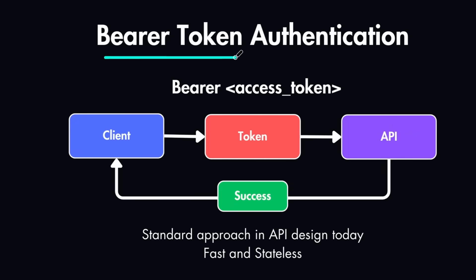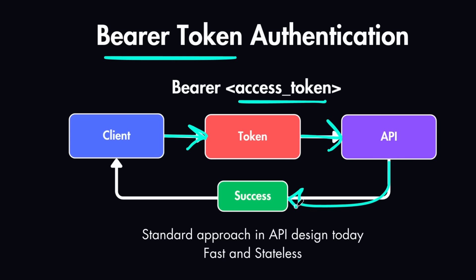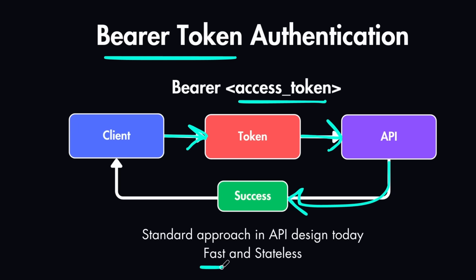Next, we have bearer tokens, which are more secure compared to basic authentication. Here, you send an access token with each request instead of a username and password encoding. Whenever the client needs to access resources, they send this token within the request, and then your API verifies or rejects the token. If it verifies, you send a successful response with the requested data. Bearer tokens are the standard approach nowadays, especially in API design, because they are fast and stateless, which makes it easy to scale those APIs.